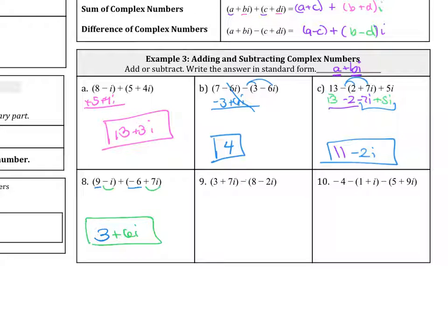For number 9, we distribute the negative. So negative 8 and the negative times negative is a positive 2i. So this becomes a negative 5 plus 9i.